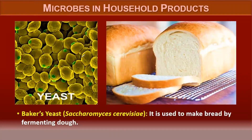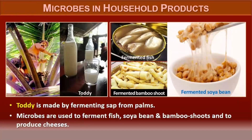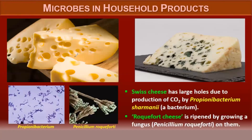Baker's yeast, used in bakery industries for the production of bread by fermentation, is named Saccharomyces cerevisiae. There are other products also — examples are toddy, which is made by fermenting sap from palm. Microbes are also used to ferment fishes, bamboo shoots, and soya beans, and to produce cheese.